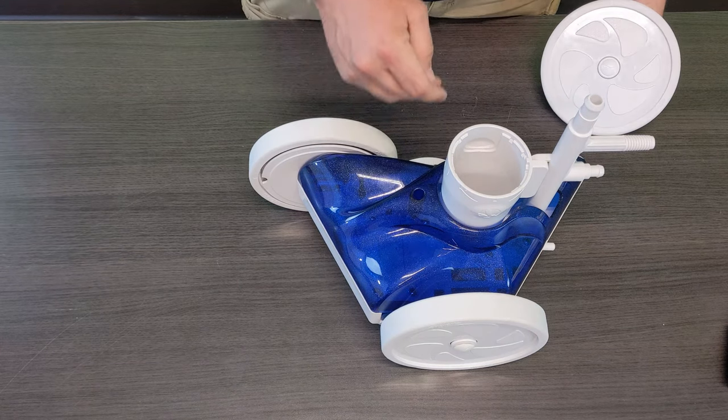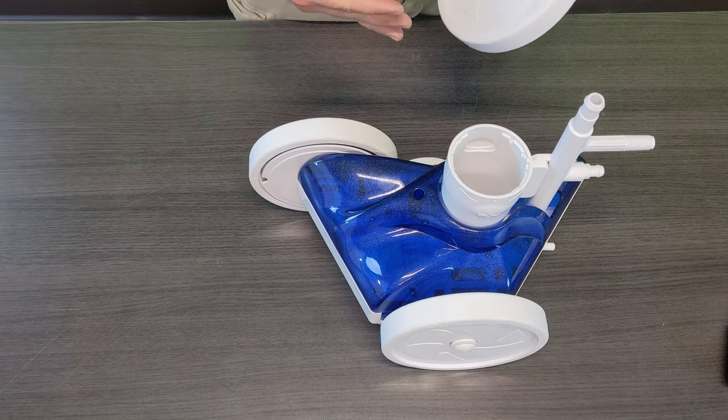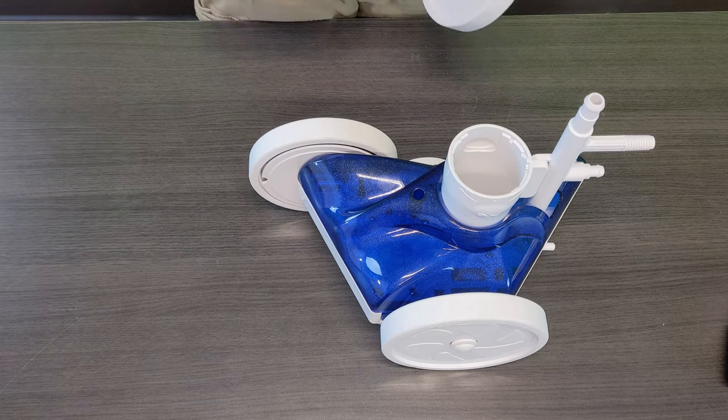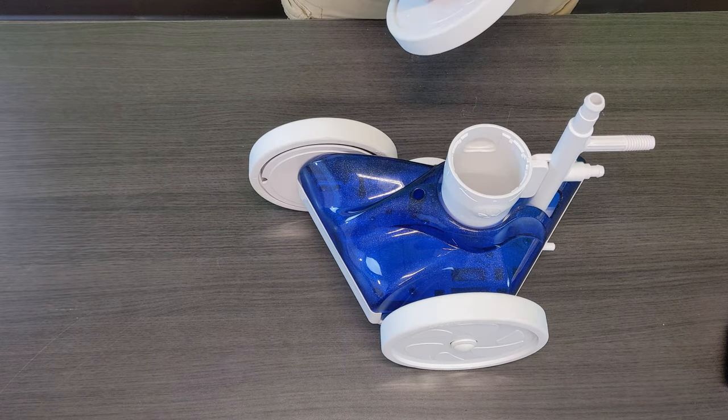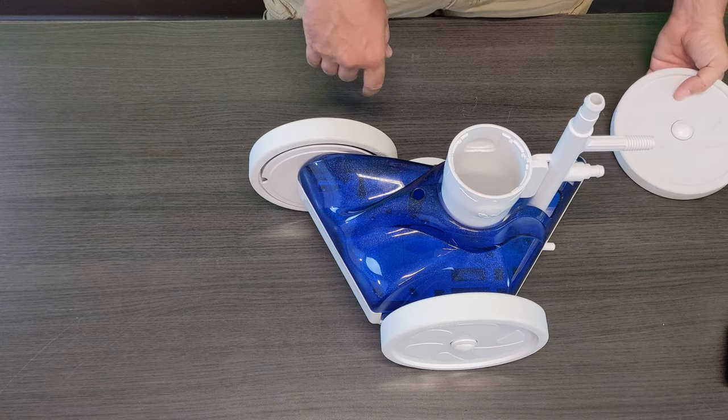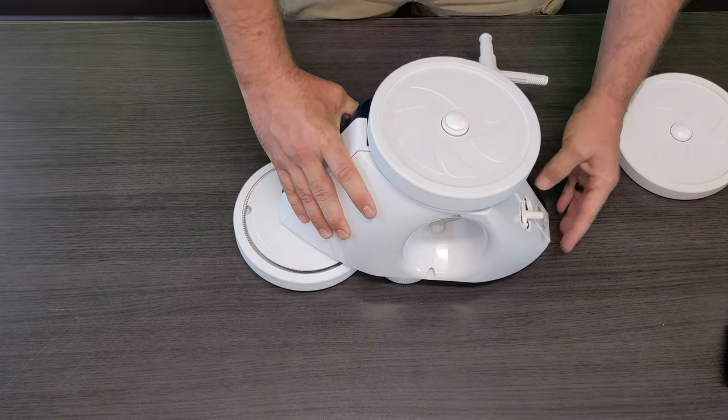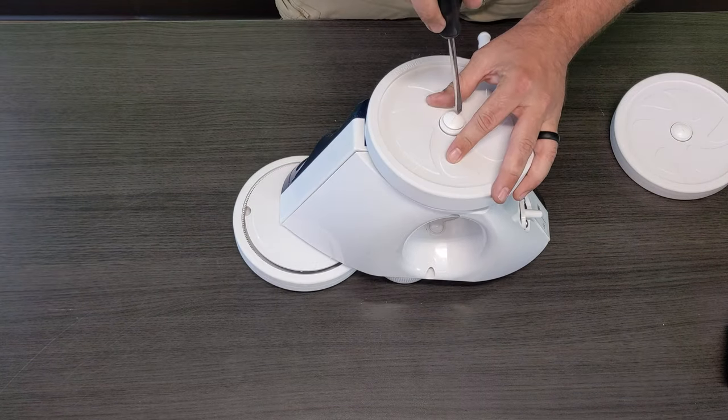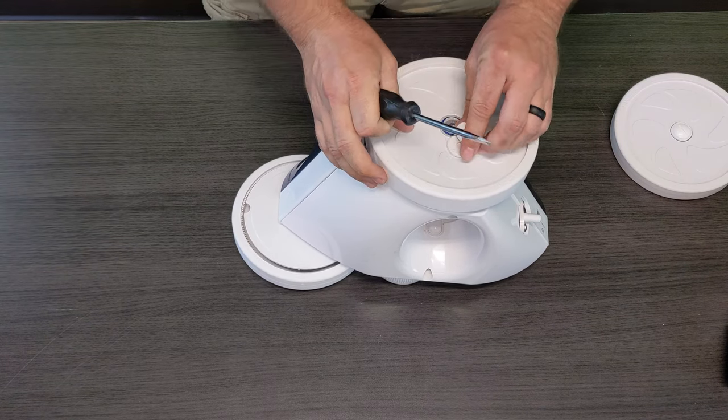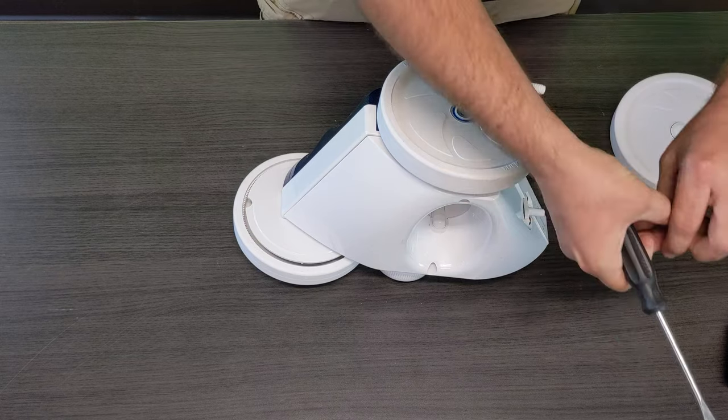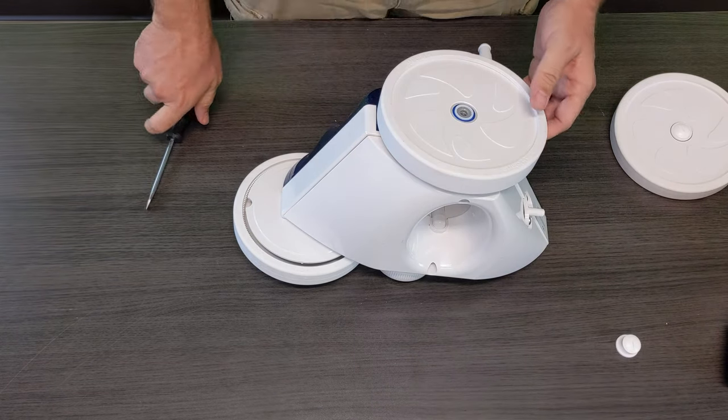But for today I'm gonna take one of the tires off for you and show you the bearings that come included as well as making sure that you install them correctly so that they function properly for the cleaner. So if you simply remove the wheel screw and the washer then you can pull the tires straight off.